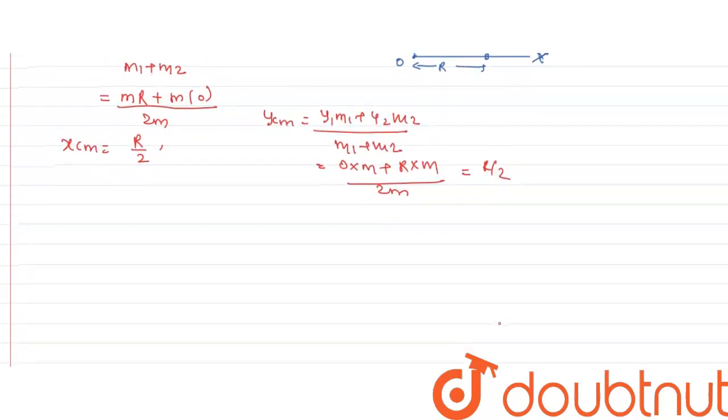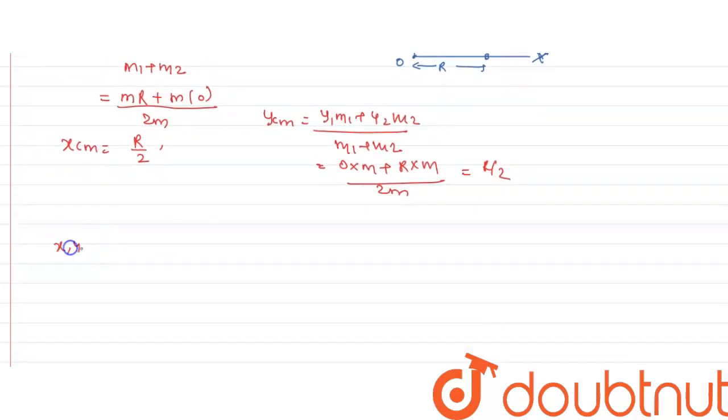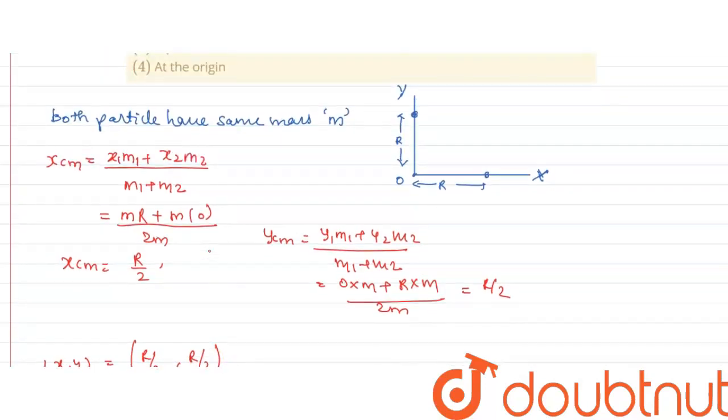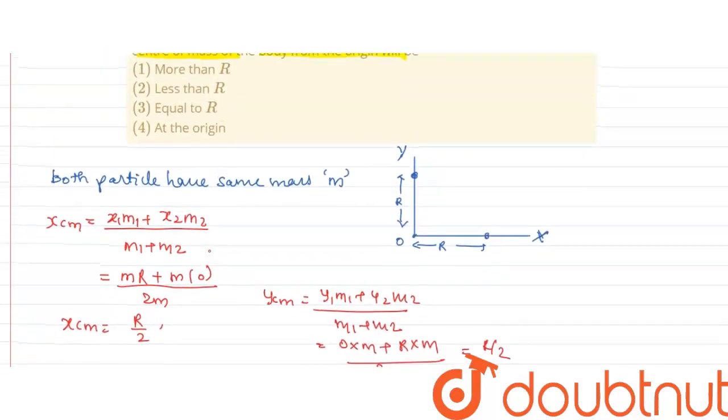So, our coordinate of center of mass is (x, y) equal to R by 2, R by 2. So, the center of mass of particle will lie almost here, which is R by 2, R by 2.